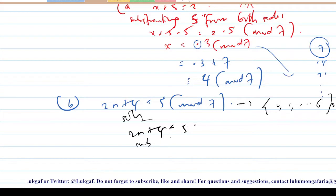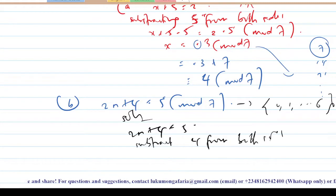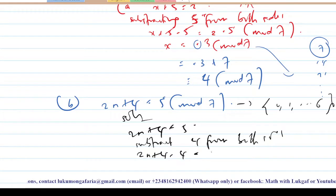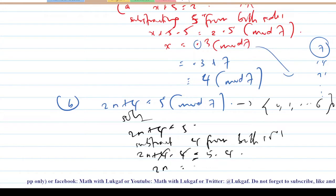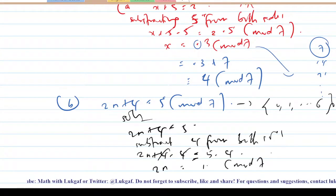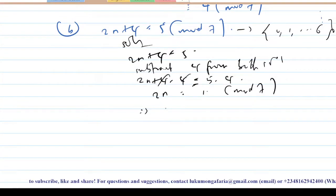Subtract 4 from both sides: 2n plus 4 minus 4 equals 5 minus 4. These cancel each other, so you have 2n equals 1 modulo 7.